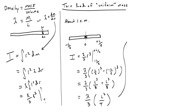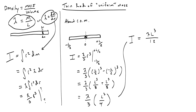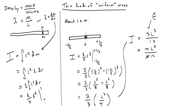We combine the 3 and the 4 to get lambda L cubed over 12. Now we need to substitute back in for lambda, since the final answer shouldn't contain lambda. Lambda equals the total mass divided by the total length, M over L. Plugging M over L in for lambda gives ML cubed over 12L. One of the L's cancels out, and what we're left with is ML squared over 12, or equivalently one-twelfth ML squared. That's the moment of inertia for a thin rod about its center of mass.